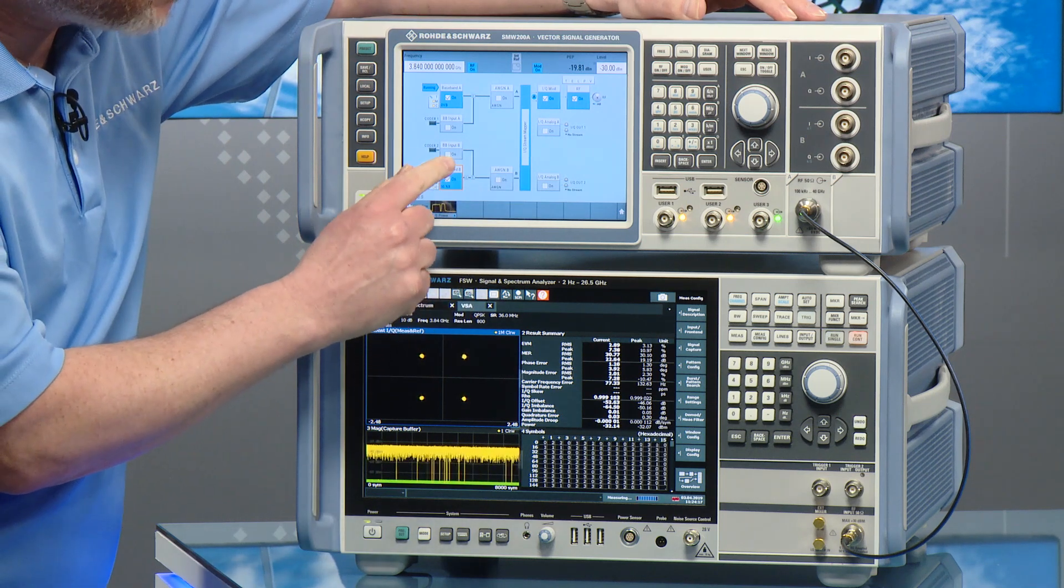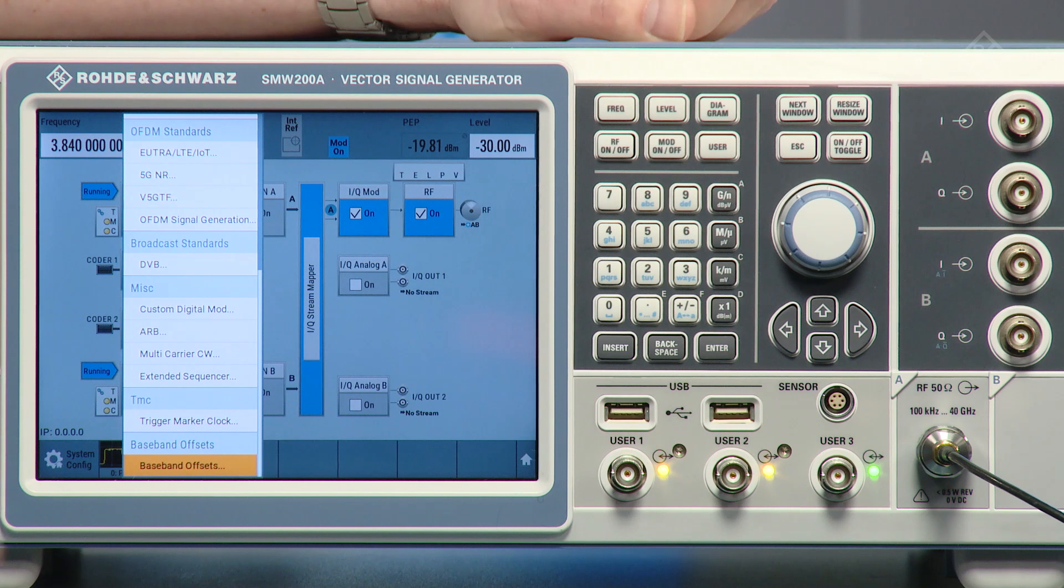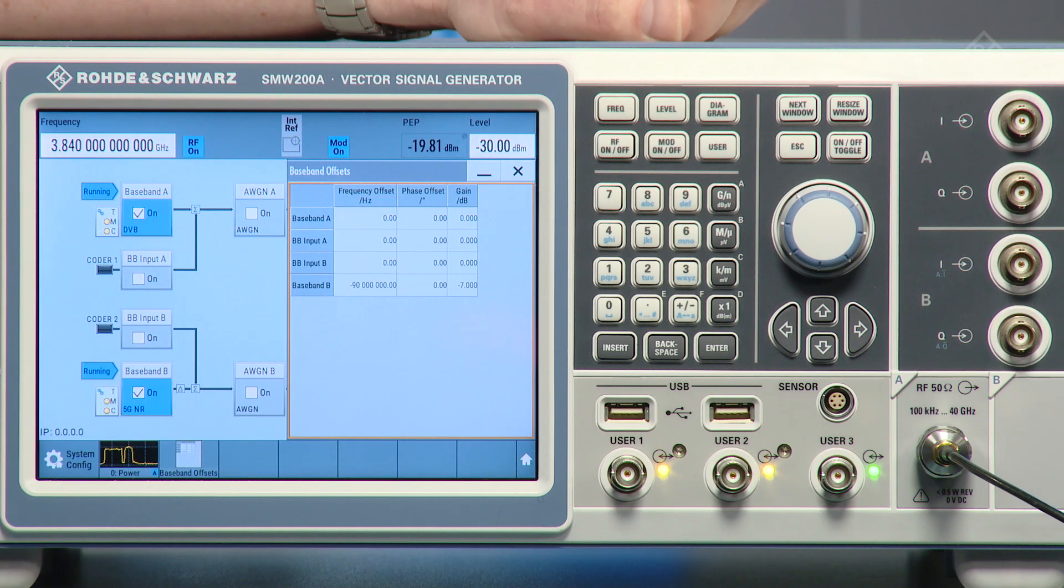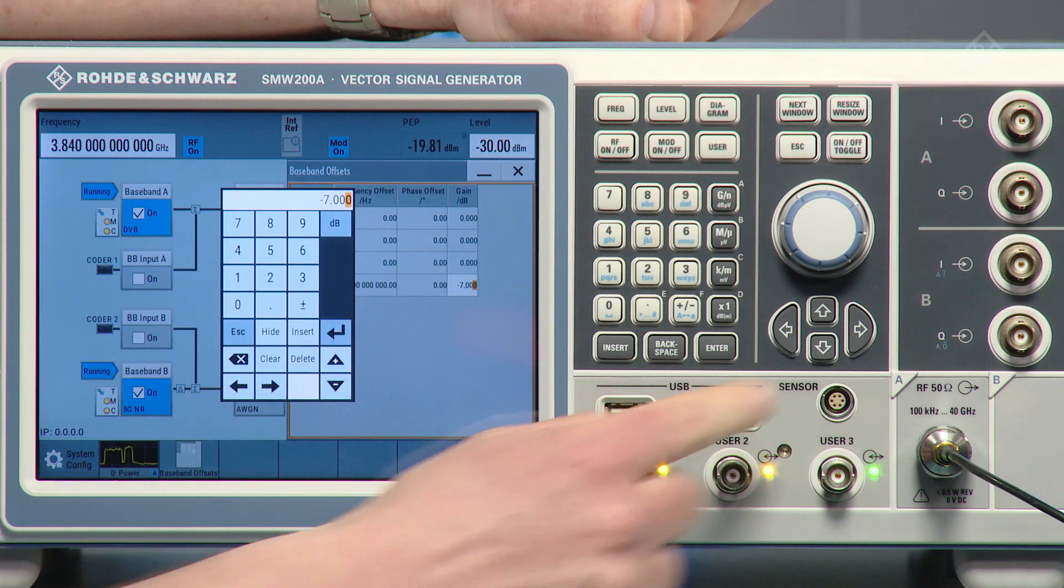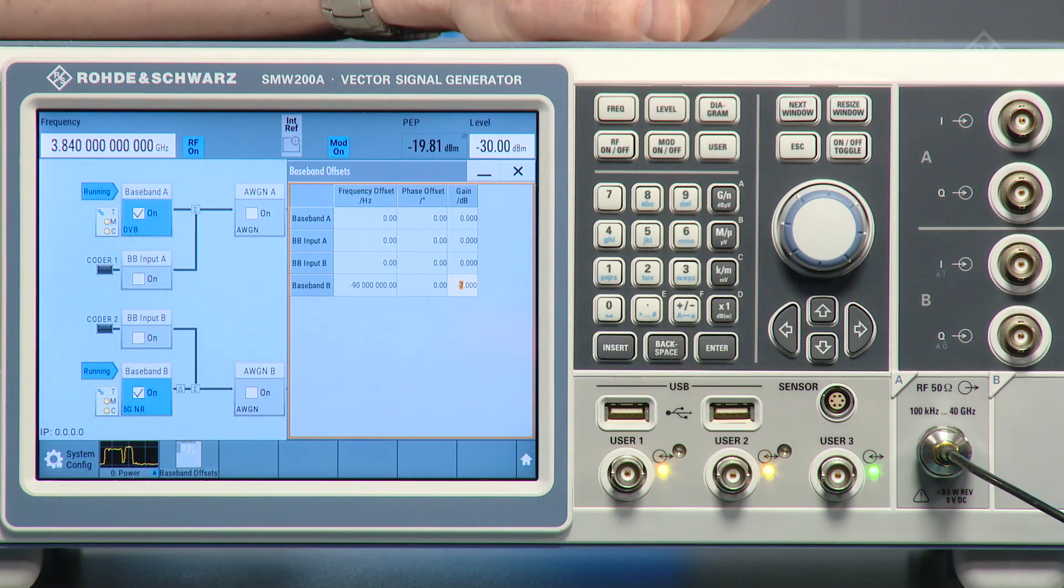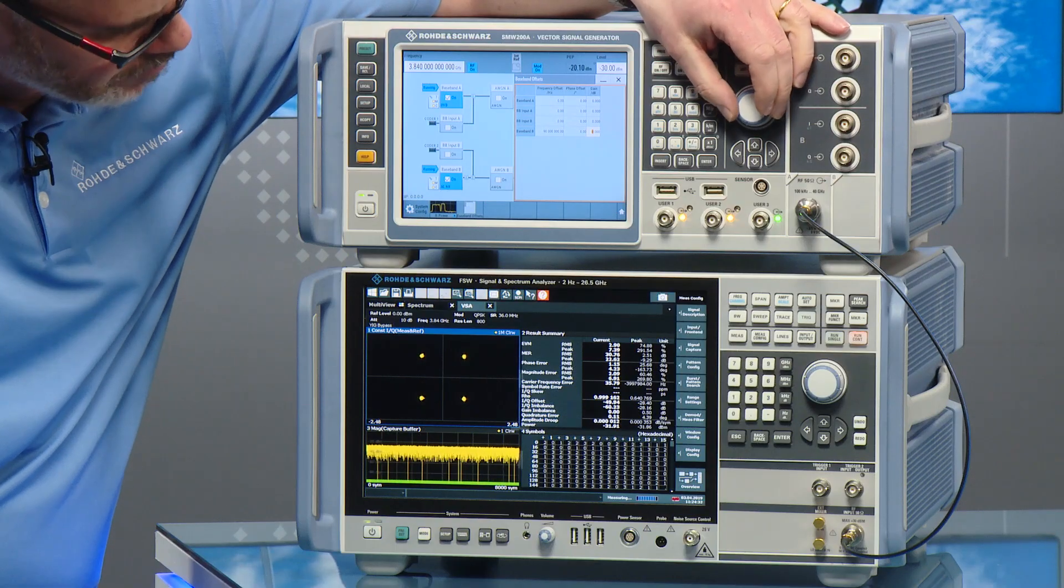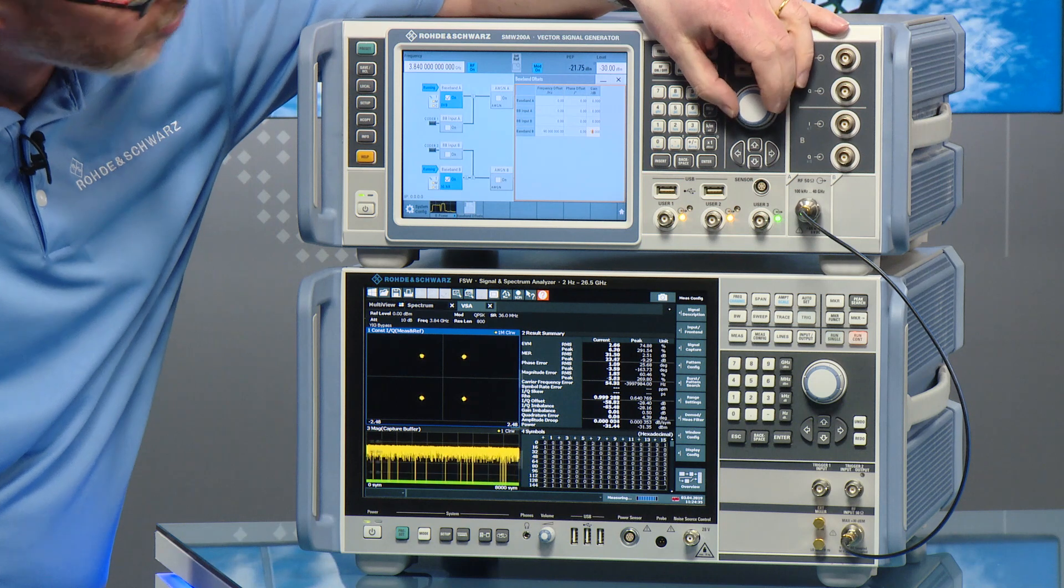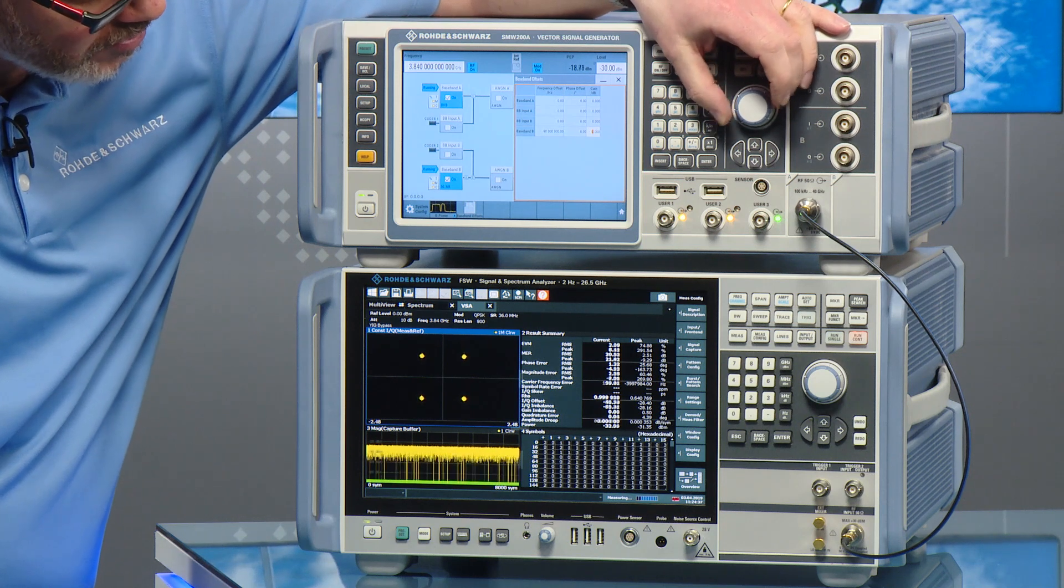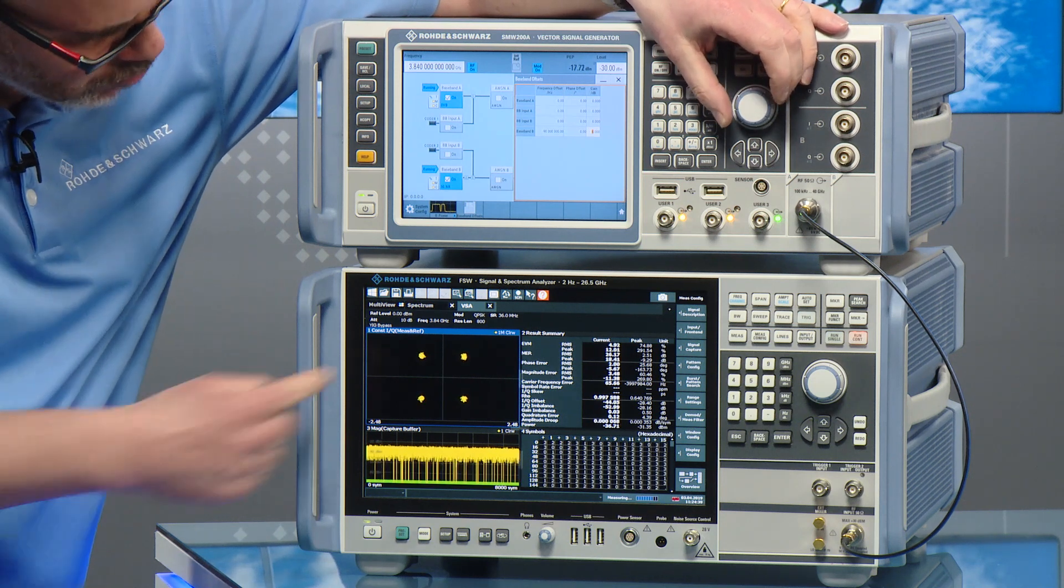But we can take that one step further by going back to the signal generator and actually changing the power level of that interference signal. So here on the signal generator, in real time we can adjust the power level. And as I increase that power level, what you're going to see is the EVM results getting much worse.